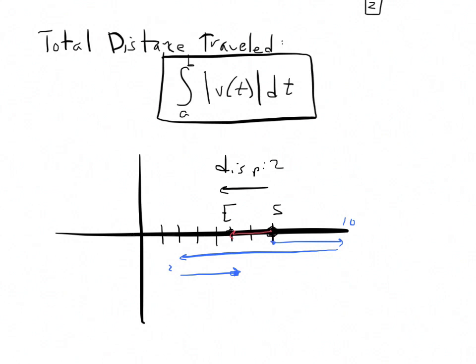In this case, it still started at 7 and ended at 5. Its displacement is still 2, but its total distance traveled—it went 3 units to 10, then 8 units from 10 back to 2, then 3 more units from 2 to 5. So the total distance traveled is 21. These two things can be completely different from one another.